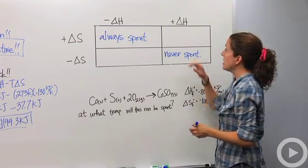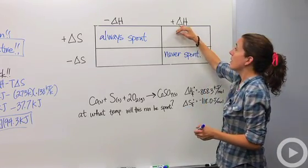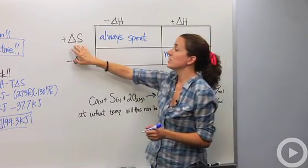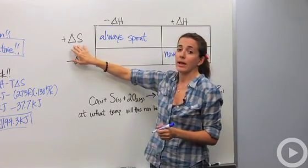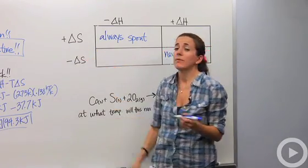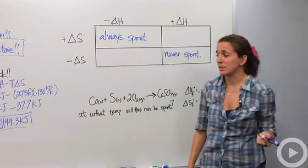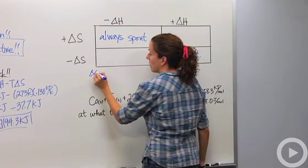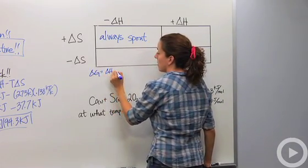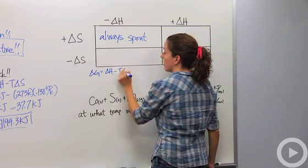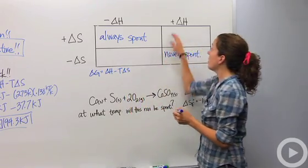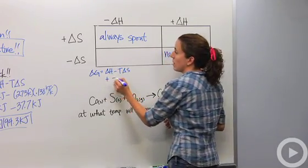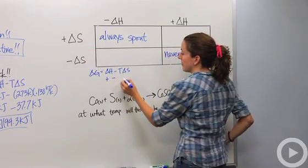Let's look at other combinations. Say it's endothermic — meaning we require energy — but disorder is very high (positive delta S). That's when temperature comes into play. In our formula: we have a positive delta H minus a positive delta S.